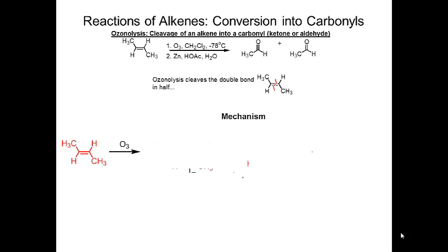One way to convert alkenes into carbonyls is through a process called ozonolysis. This is a two-step process. The first reaction gives some intermediate that the second reaction then converts into the final product. If you look at the alkene, you can see that in the product, both carbons in the double bond get oxidized up to carbonyls.